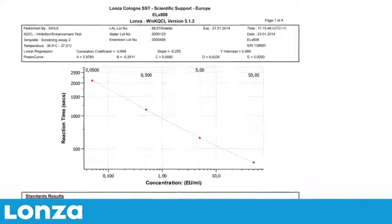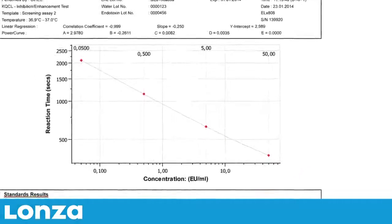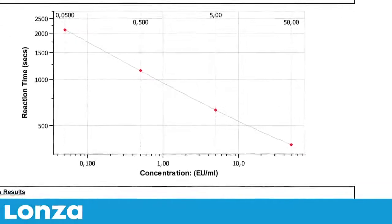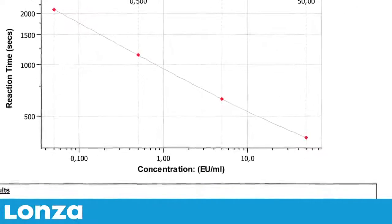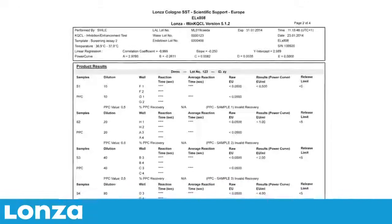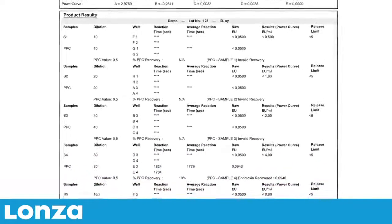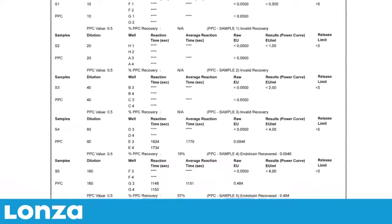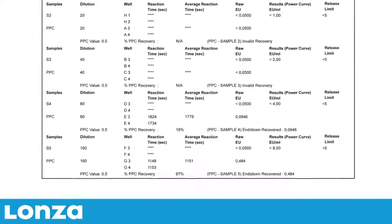The WinKQCL software automatically creates a standard curve via a log-log linear correlation of the reaction time of each standard with its corresponding endotoxin concentration. The endotoxin concentrations for the unknown samples are then read from the standard curve.